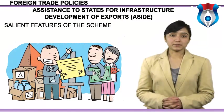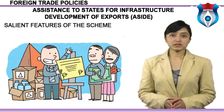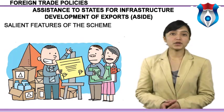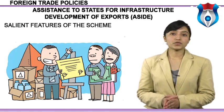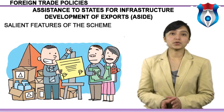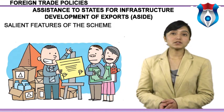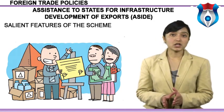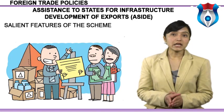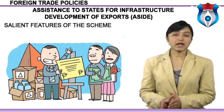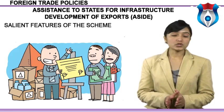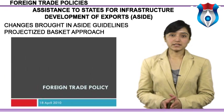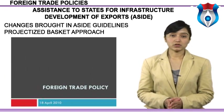Salient features of the ASIDE scheme: the objective is to involve states and UTs in the export effort by providing assistance to state governments and UT administrations for creating appropriate infrastructure for development and growth of exports. Such involvement will be based on projects to be prioritized by states and UTs to address the critical link both at the point of production and the point of evacuation in industrial clusters, largely within the contour of the first mile and the last mile consideration. The scheme will provide an outlay for development of export infrastructure, distributed to states and UTs according to predefined criteria.